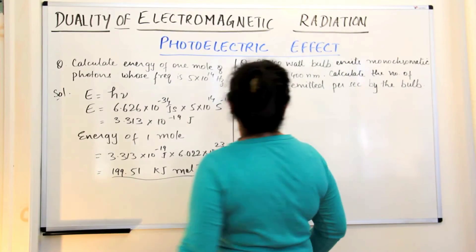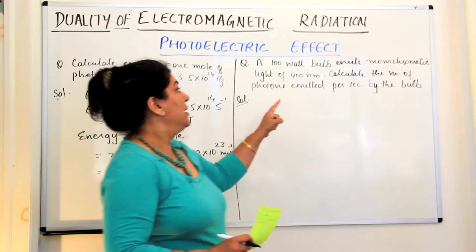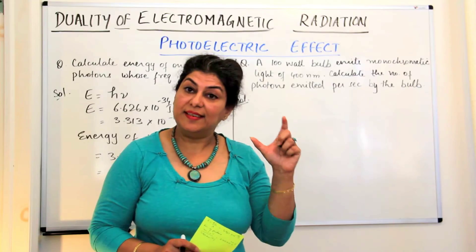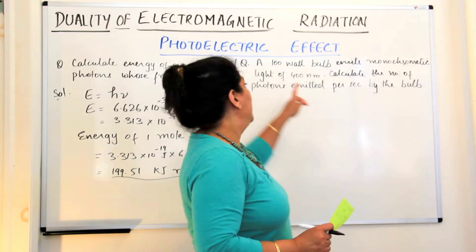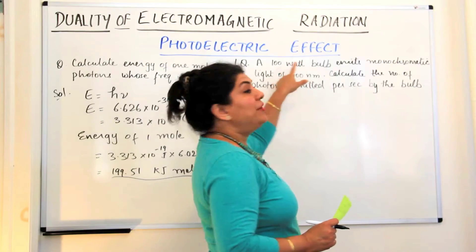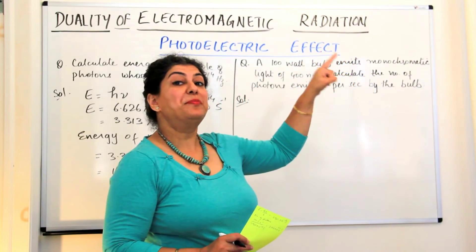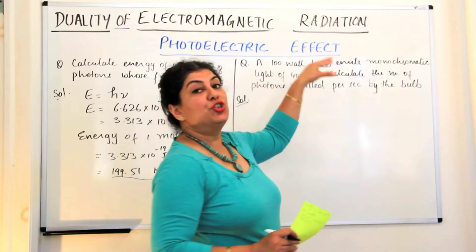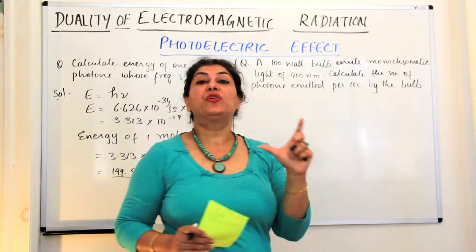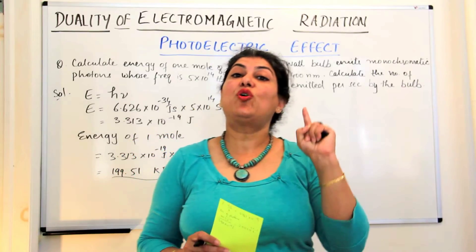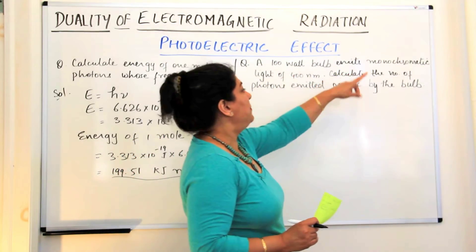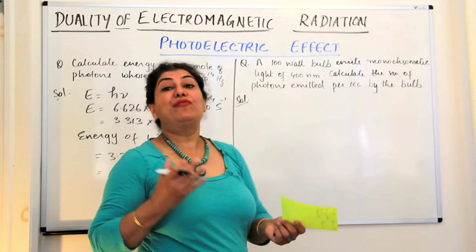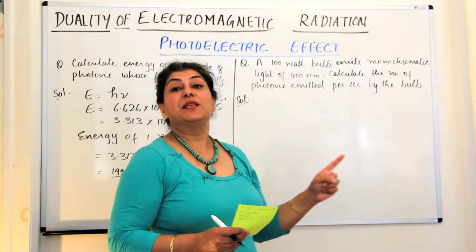Let's now come to the next problem. A 100 watt bulb emits monochromatic light of 400 nanometers. When we are talking of nanometers, it means we are talking of wavelength. 100 watts can also be written as 100 joules per second. Monochromatic means light of one color. So you have to calculate the number of photons emitted per second by the bulb.